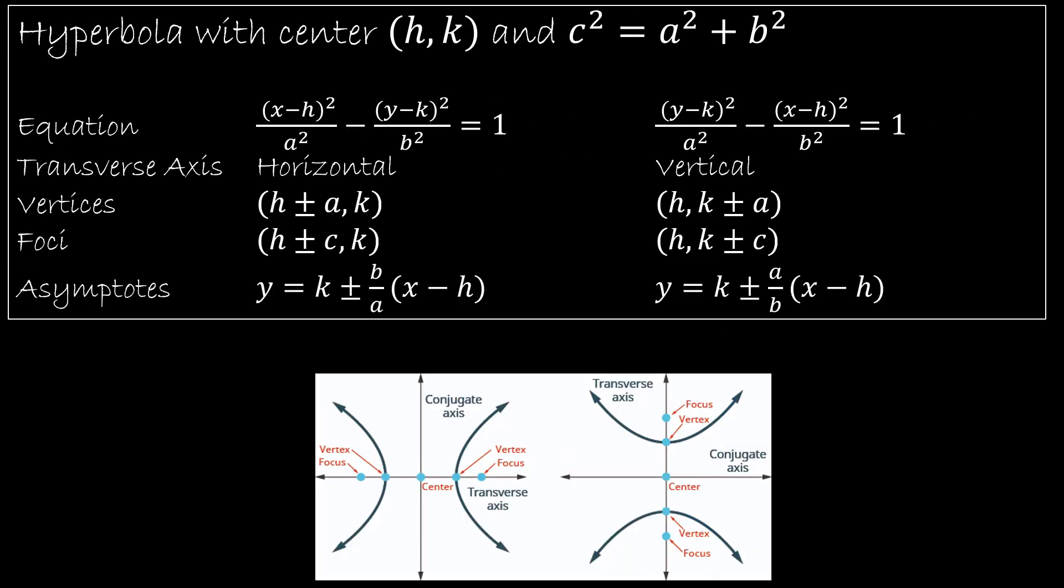And the last is the hyperbola. Again, the center is (h,k). And the fun thing about a hyperbola is that it's really just an ellipse that has been cut in half and split open. So an ellipse would look like this, whereas the hyperbola cuts it in half and puts those arcs outward instead.